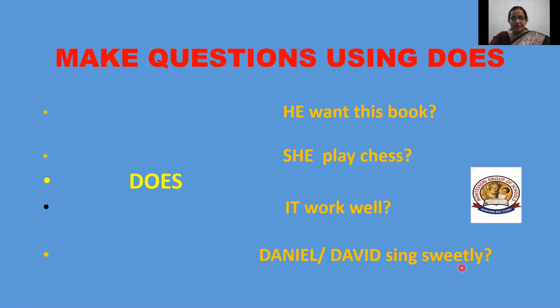If you want to frame this sentence using Daniel as a regular statement, then it will be Daniel sings sweetly — one person, verb should have S, so it is singular. So in this way, does is used to frame questions.